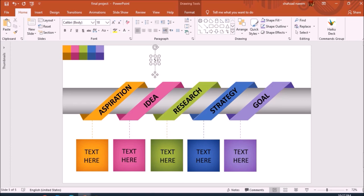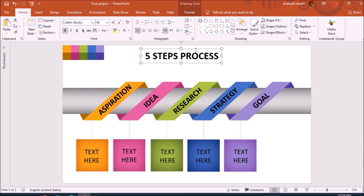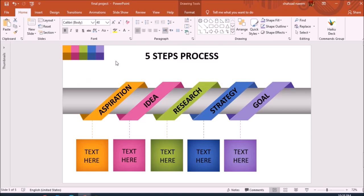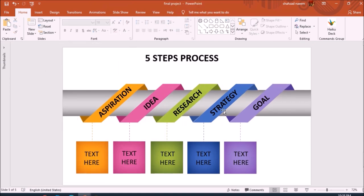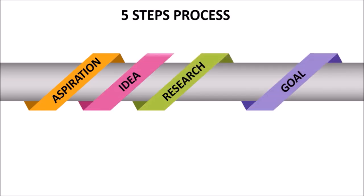Now let's add the heading for this process — I type 'Five Step Process' and increase the font size. I then remove the color swatches I had placed on the slide since we have already used them, and it's time to have a look at the full design.